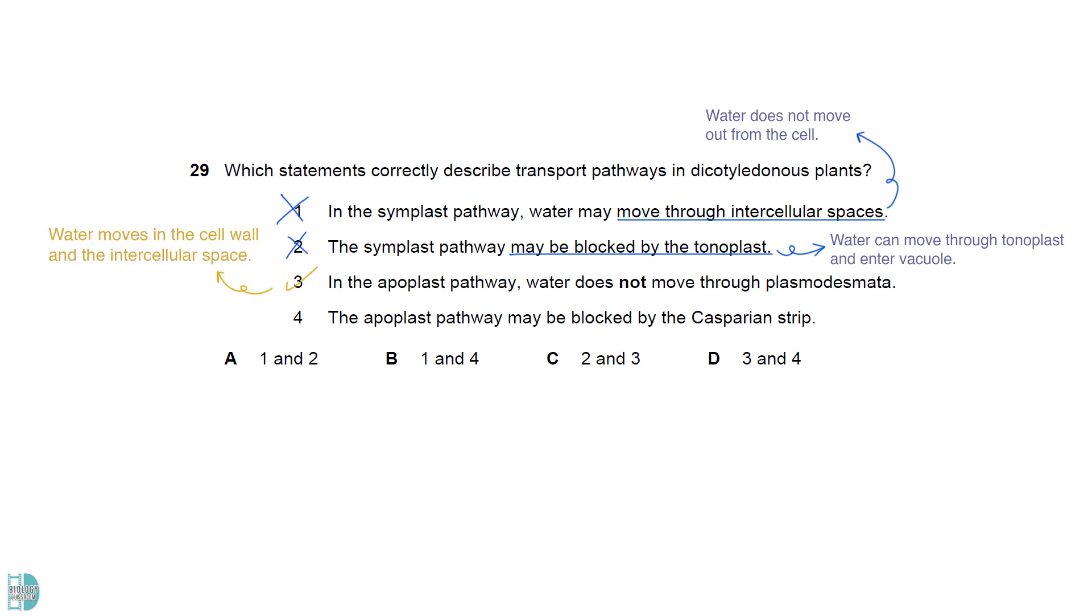In the apoplast pathway, water moves in the cell wall and the intercellular space. Since they do not enter the cytoplasm, they do not pass through the plasmodesmata. The Casparian strip is made out of suberin, which is hydrophobic. It blocks the movement of water.